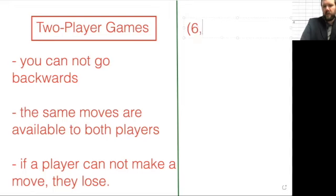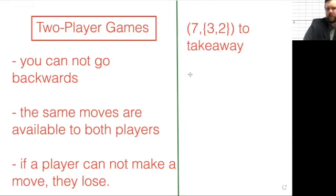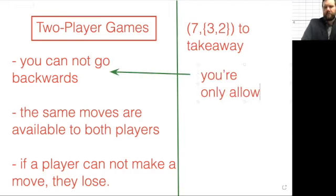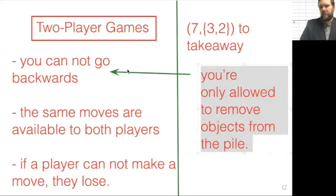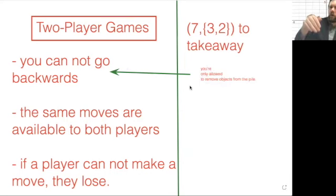Let's look at something like 7,3,2 toothpick takeaway, or just takeaway. You can't go backwards. What does that mean? You're only allowed to remove objects from the pile. You're not allowed to add them back, and so you're kind of going in one direction only in terms of the move space.